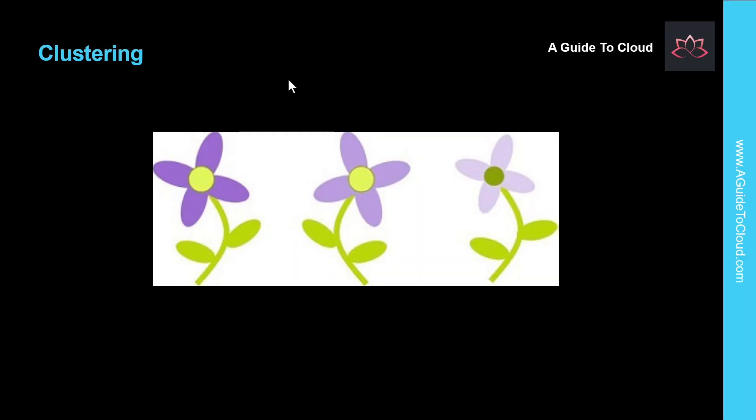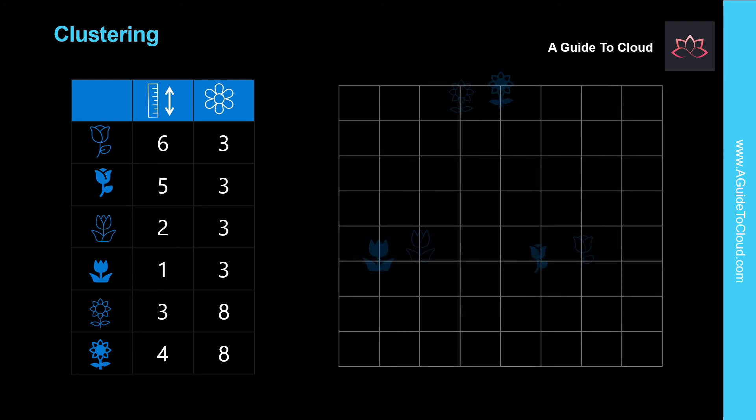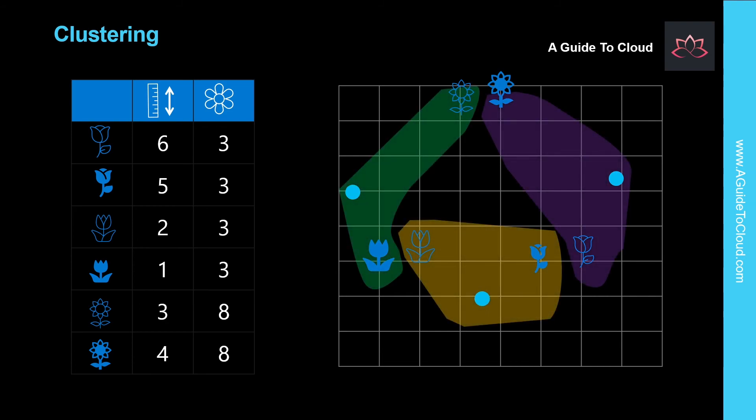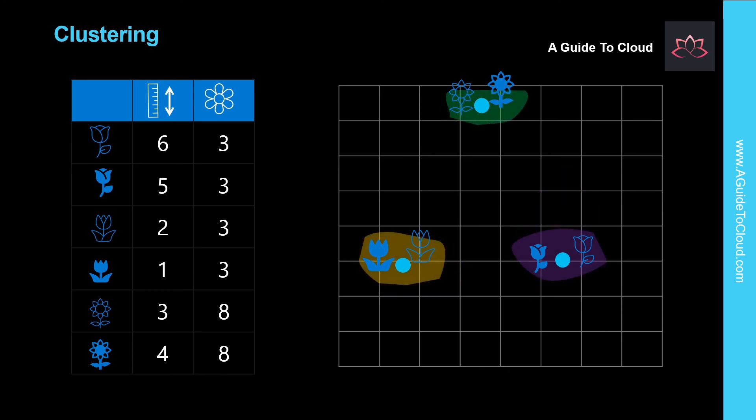Let's understand clustering. Clustering is a form of machine learning used to group similar items into clusters based on their features. For example, a botanist might take measurements of plants and group them based on similarities in their proportions. Clustering is an example of unsupervised machine learning in which you train a model to separate items into clusters based purely on their characteristics or features. There is no previously known cluster value or label from which to train the model.